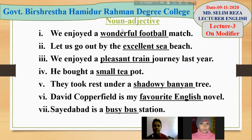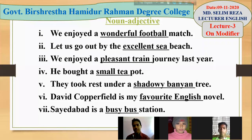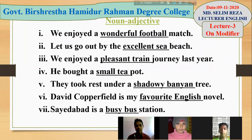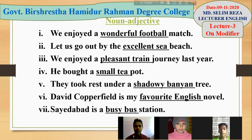As it expresses a sense jointly, it is called noun adjective. The last example of noun adjective: 'The ward is a busy bus station.' 'Busy' is an adjective, 'bus' is a noun — together they give extra information about 'station'. So it's called noun adjective used as premodifier. I hope you may have understood what noun adjective is. Is there any problem? No. So now I am going to the next slide.